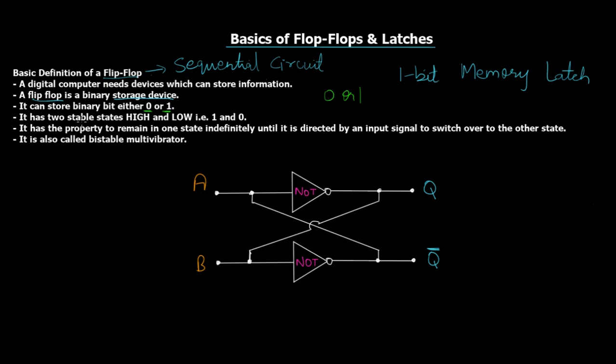It has two stable states which is high and low, and that is why it is also called as a bi-stable multivibrator. By multivibrator I mean it flips and flops between the two states, that is high and low. The main property it has is it has the property to remain in one state indefinitely until it is directed by an input signal to switch over to the other state.